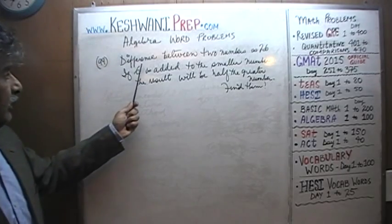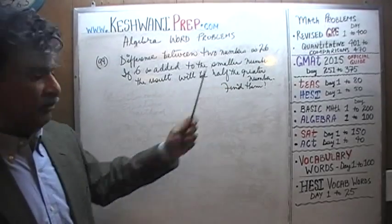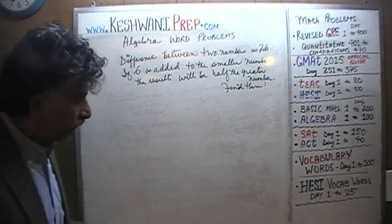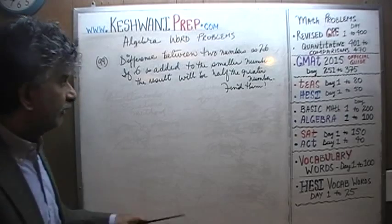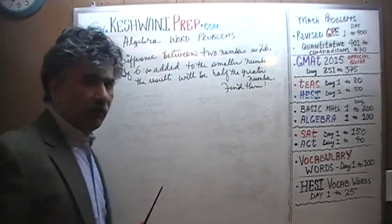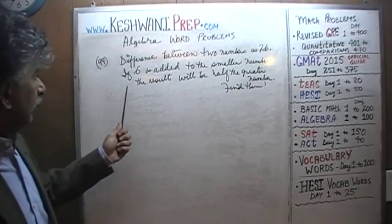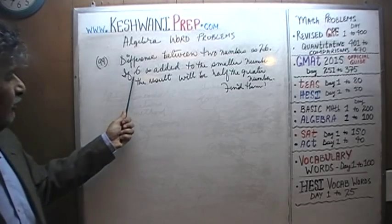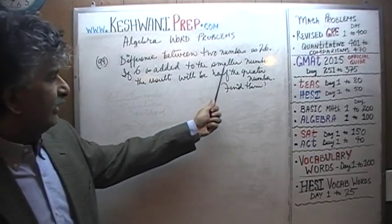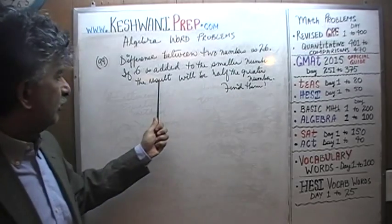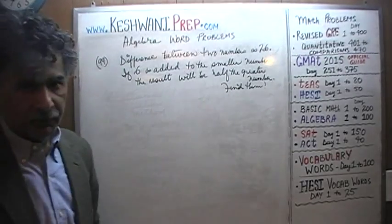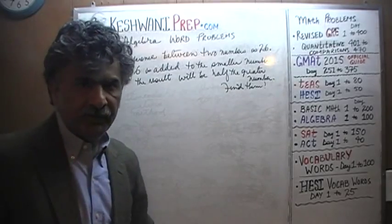We are told that the difference between two numbers is 26. We are further told that if 6 is added to the smaller number, the result will be half the greater number. What are the numbers? Find them.